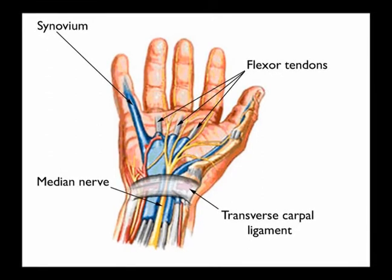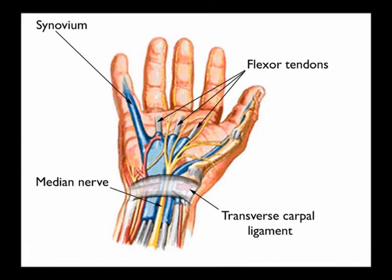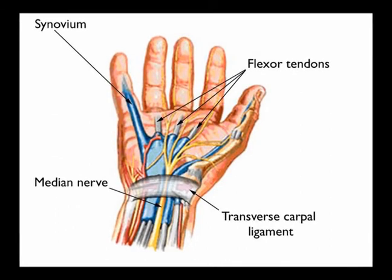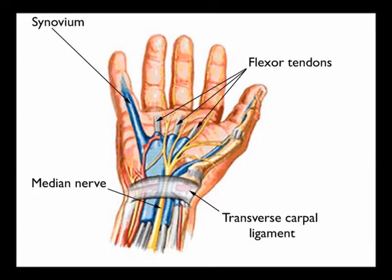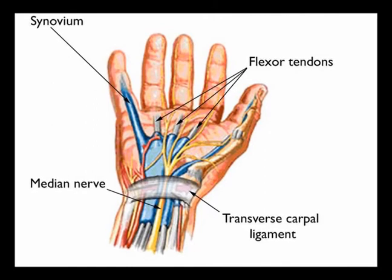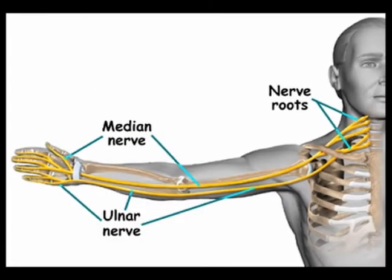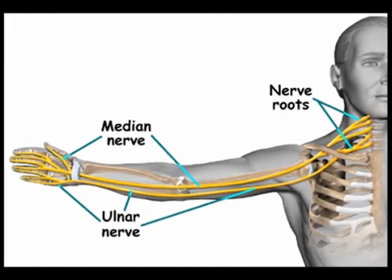Symptoms of a nerve impingement or nerve entrapment condition include sharp shooting, shock-like pain, numbness, tingling, burning, heaviness, fatigue, cold, swelling, and in long-standing cases there can be muscle atrophy.